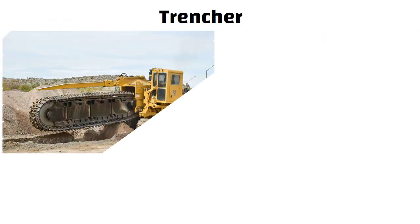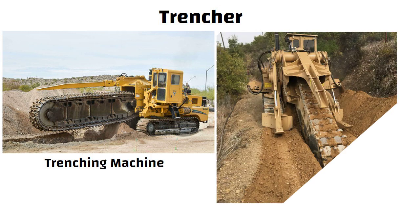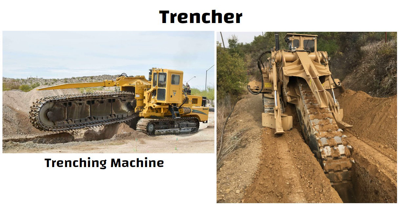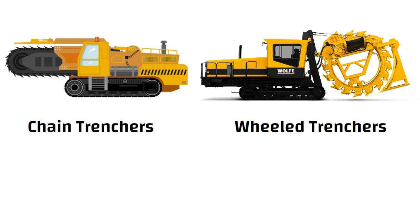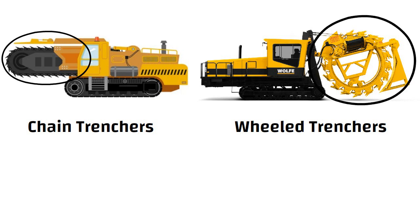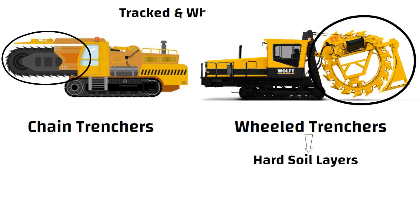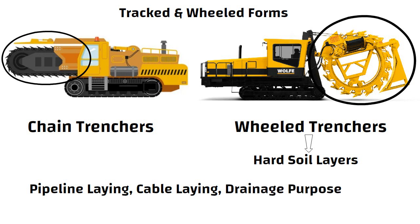Trenchers, also known as trenching machines, are used to excavate trenches in soil. They are available in two types: chain trenchers and wheel trenchers. Chain trenchers contain a fixed long arm around which a digging chain is provided. Wheel trenchers contain a metal wheel with digging teeth around it. Wheel trenchers are more suitable for excavating hard soil layers. Both types are available in tracked as well as wheeled forms. Trenchers are generally used for pipeline laying, cable laying, and drainage purposes.